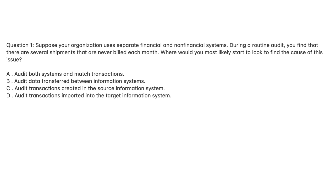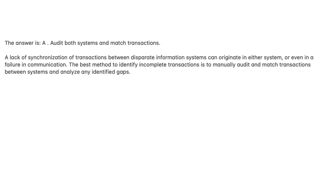Question 1. Suppose your organization uses separate financial and non-financial systems. During a routine audit, you find that there are several shipments that are never billed each month. Where would you most likely start to look to find the cause of this issue? A. Audit both systems and match transactions. B. Audit data transferred between information systems. C. Audit transactions created in the source information system. D. Audit transactions imported into the target information system. The answer is A.